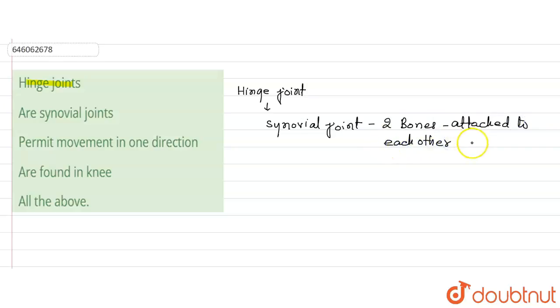And can only move in one axis. Next is that hinge joints basically permit movement in only one direction as they are synovial joints.